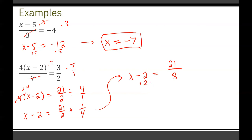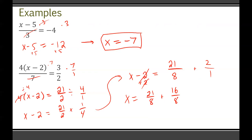Last step: add 2 to both sides. Since this is a fraction plus a number, think of 2 as 2/1 and convert to a common denominator of 8, making it 16/8. So x = 21/8 plus 16/8 = 37/8. Since 37 and 8 share no common factors, x = 37/8 is fully simplified.